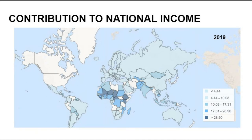Agriculture is the main source of livelihood to a majority of the population, particularly in developing nations that have most of their population in rural areas. The share of employment in agriculture decreases when they develop non-agricultural activities to absorb the fast-growing population. This means that developing their non-agricultural activities helps reduce poverty in the countries.